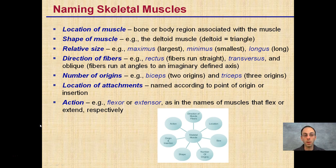It's not just a random name. The location of the muscle, the bone or body region associated with that muscle, can affect the name. The shape of the muscle can also be part of where it gets its name. For example, the deltoid muscle — deltoid means triangle, so it's a triangular shaped muscle.